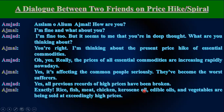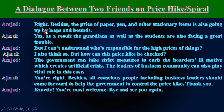Amjad: Yes, all previous records of high prices have been broken. Ajman: Exactly — rice, fish, meat, chicken, kerosene oil, edible oils, and vegetables are being sold at exceedingly high prices. Amjad: Right. Besides, the price of paper, pen, and other stationery items is also going up by leaps and bounds. 'Besides' is a transitional device. Ajman: Yes, as a result, guardians as well as students are also facing great trouble. Amjad: But I can't understand — who is responsible for the high prices of things? Ajman: I also think so. But how can this price hike be checked? Amjad: The government can take strict measures to curb the hoarders and profiteers who create artificial prices. The leaders of the business community can also play a vital role in this.